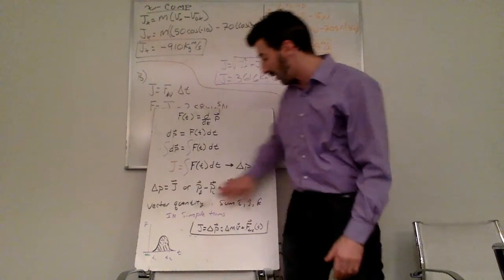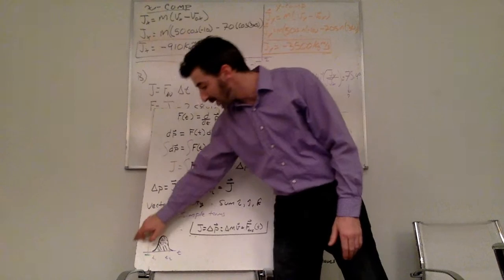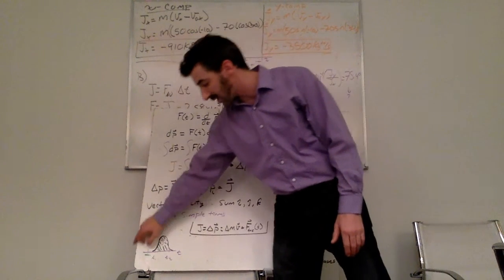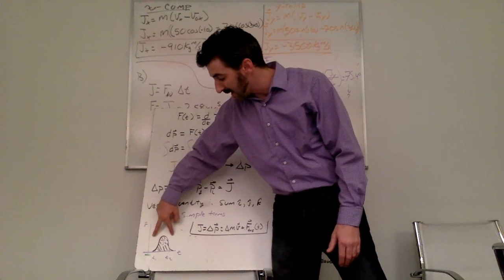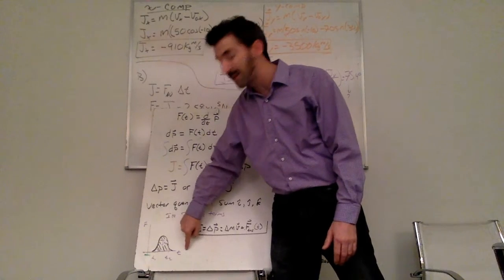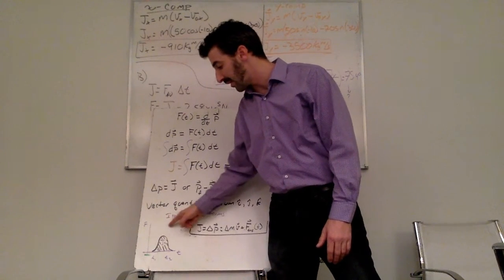As you can see, I've called it a vector quantity. You also see this graph. This graph is an impulse. My impulse over a period of time changes. I have a varying force.